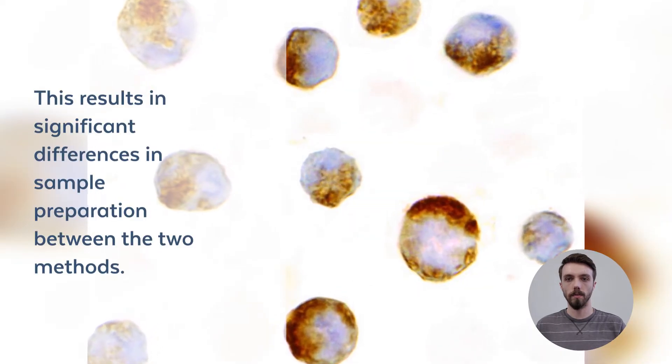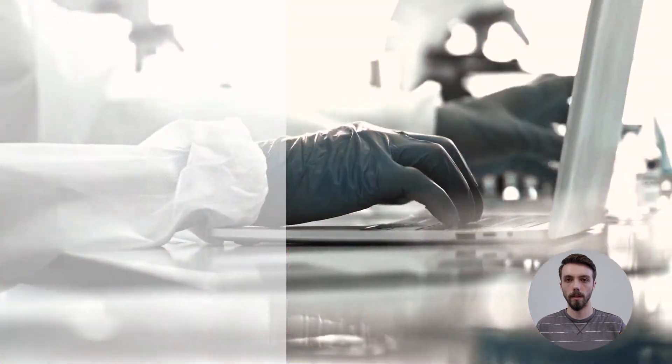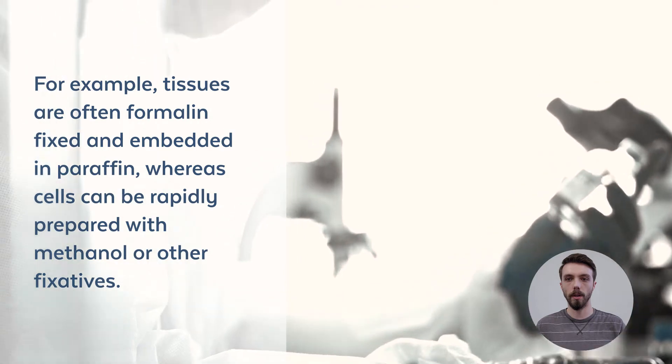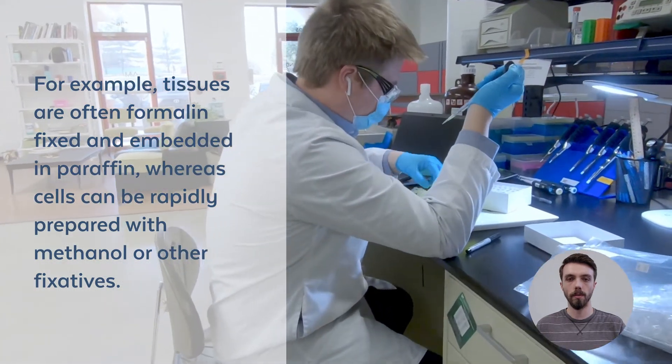This results in significant differences in sample preparation between the two methods. For example, tissues are often formalin-fixed and embedded in paraffin, whereas cells can be rapidly prepared with methanol or other fixatives.